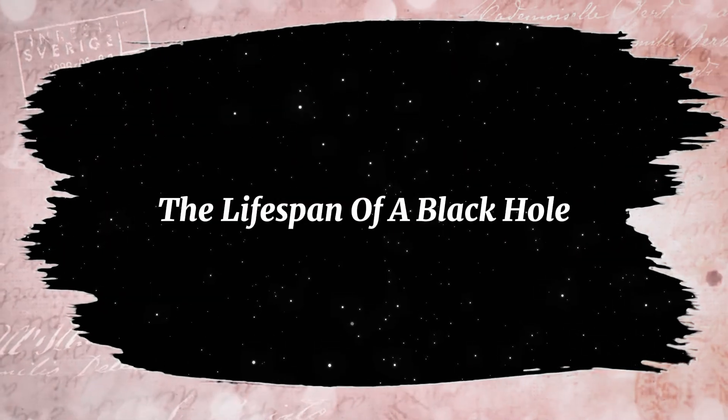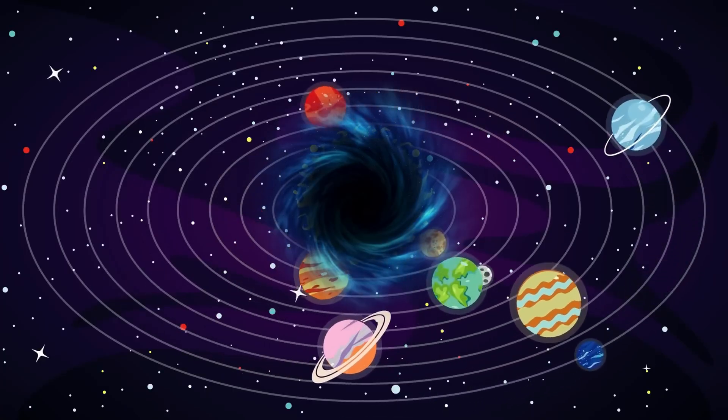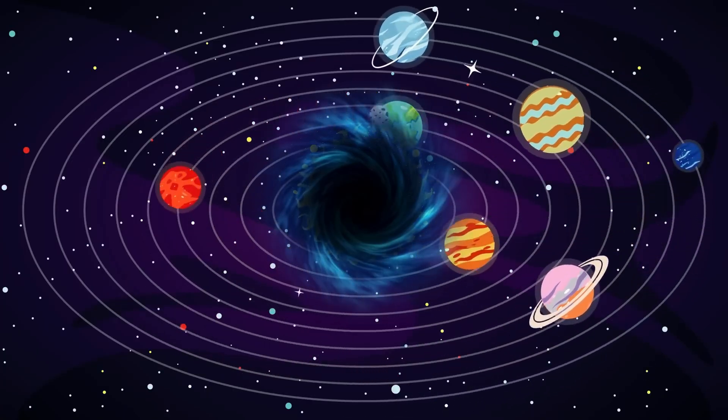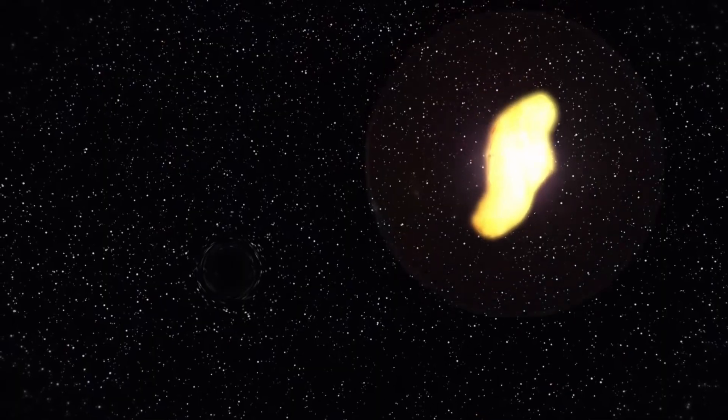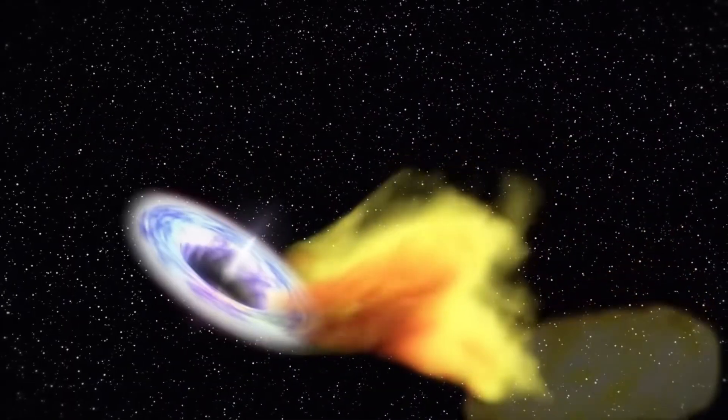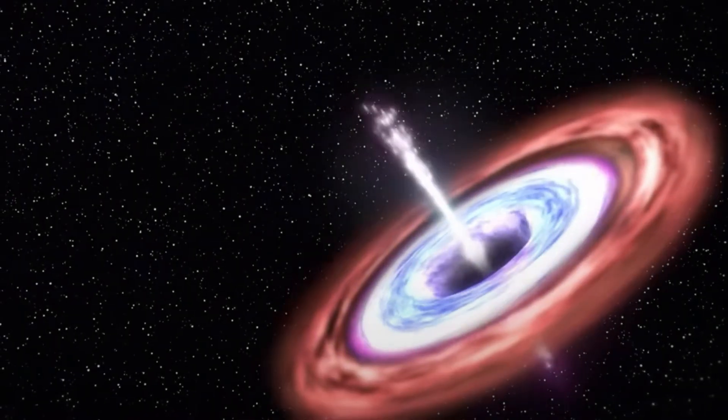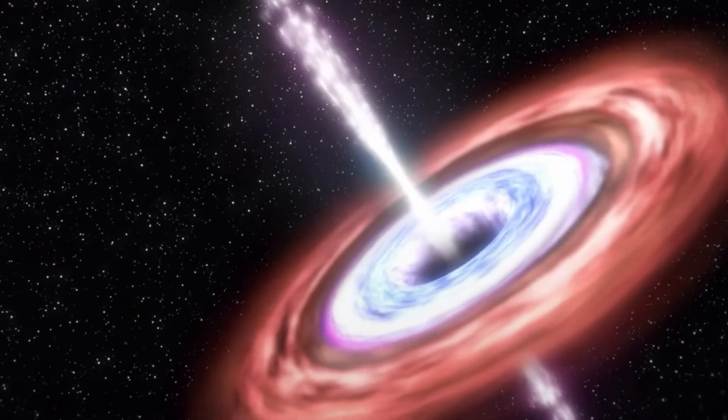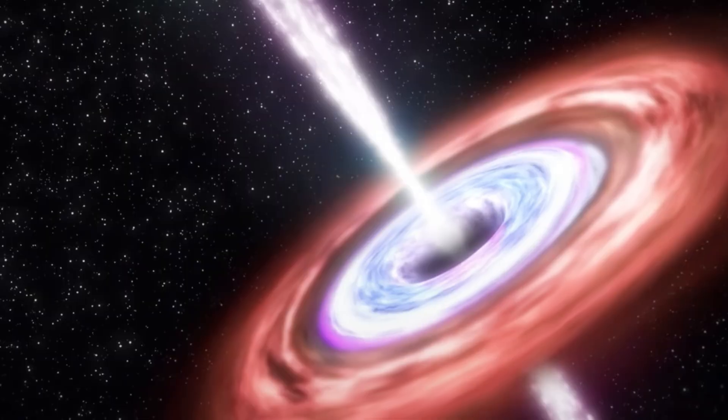The lifespan of a black hole. Once a black hole is born, it doesn't just sit there quietly. It feeds. Anything that comes too close—gas, dust, planets, even entire stars—gets pulled into its gravitational grip. This matter doesn't fall straight in. It spirals around the black hole, forming a glowing accretion disk that can shine brighter than entire galaxies.